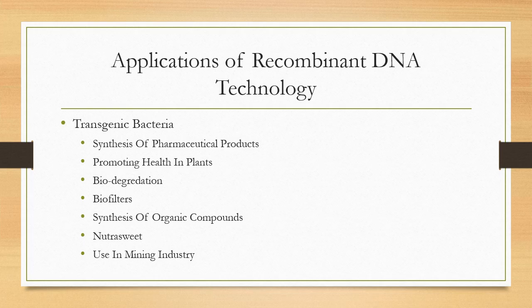Many biotechnological products are produced by bacteria, and these products are now available in the market. Some of these products are insulin, human growth hormone, tissue plasminogen activator, hemophilia factor 8, and hepatitis B vaccines. Previously insulin was obtained by killing animals and extracting it from the pancreas of pigs, goats, and cattle, but with this technology we can easily make insulin using bacteria.